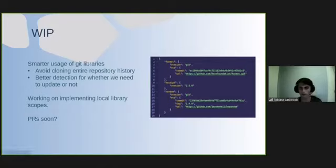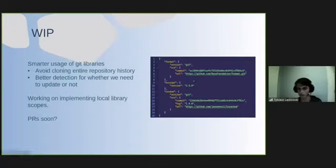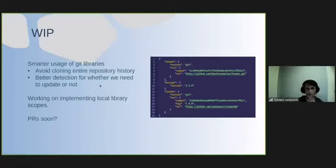I'm also working on implementing local library scopes. This is an example of a library scope file created using a local version of Hax that I have. It tracks all the Git commit IDs and all the URLs, which would kind of solve the whole library version tracking problem. Hopefully I'll be able to clean these up and make PRs soon so that other people can have a look, review the code, make suggestions, and then we can see if we can finally fix this age-old problem.